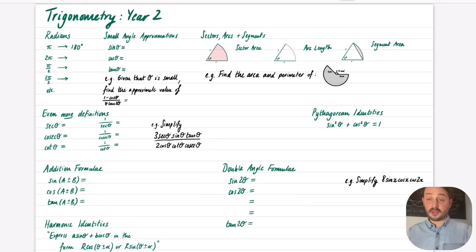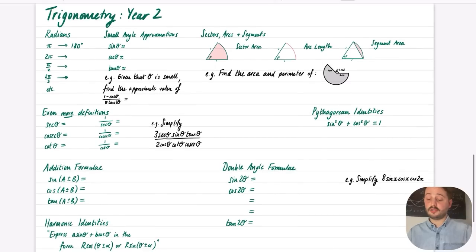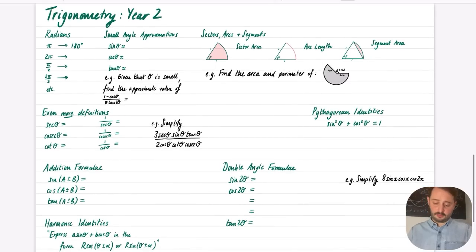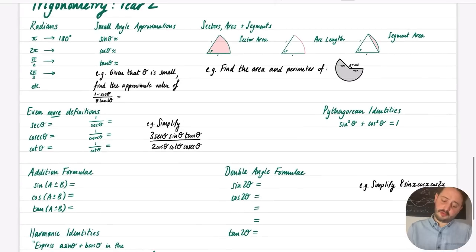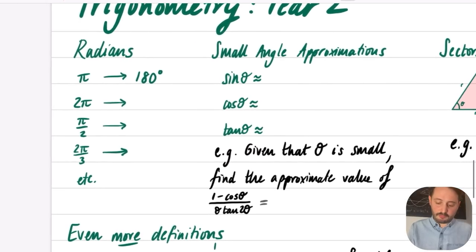You can fit all of year two trigonometry onto just one page. We'll start with radians, which are covered in chapter five.